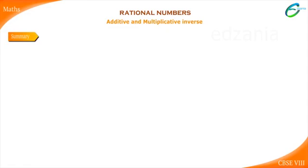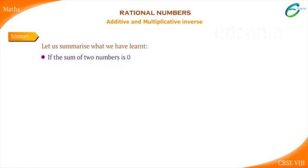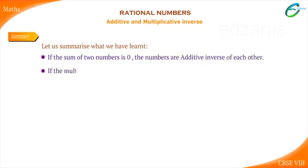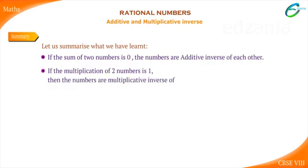Summary: let us summarize what we have learnt. If the sum of two numbers is 0, the numbers are additive inverse of each other. If the multiplication of two numbers is 1, then the numbers are multiplicative inverse of each other.